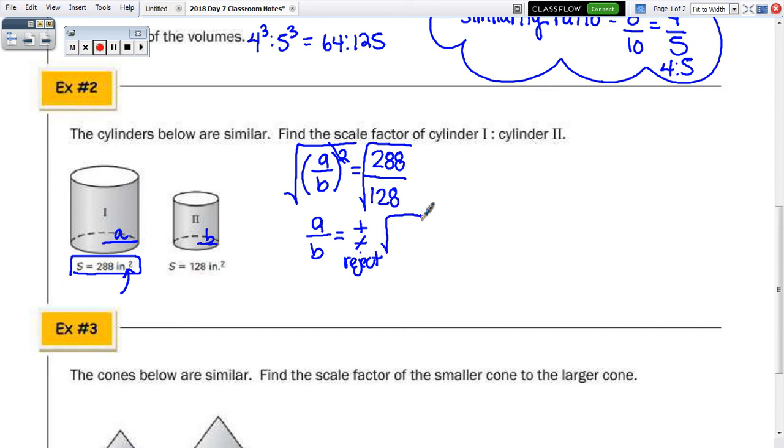288 to 128. Now, 288 and 128 are not perfect squares, but if we look to reduce that fraction. So, put 288 over 128 into your calculator. Go to math, enter, enter. It's not given in reduced form. And we get that fraction equivalent reduced to 9 fourths. And 9 and 4 are perfect squares.